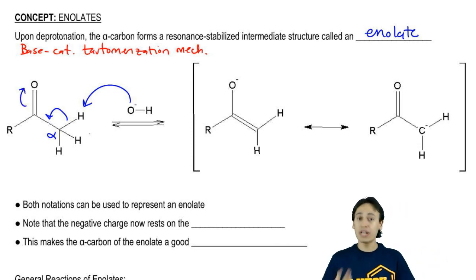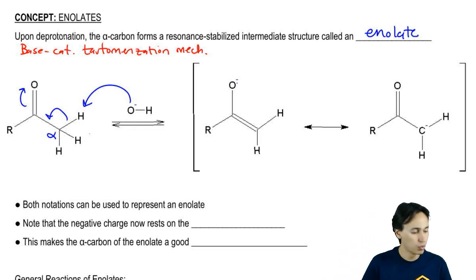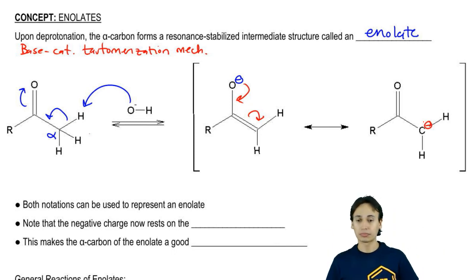This gives me a possible resonance structure where on the one hand, I have the negative charge on the O, but I could easily resonate that down to the carbon and then it could resonate back up. Both of these are considered the enolate anion and both of them are correct.